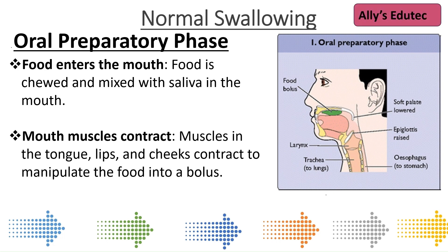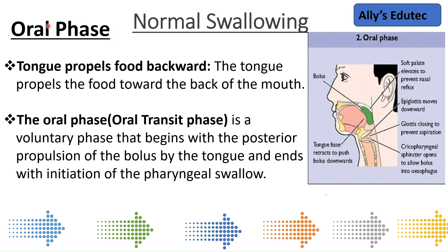After the preparatory phase, the second phase starts — that's called the oral phase. In the oral phase, the tongue pushes the food bolus to the back of the throat, so it's getting ready for swallowing. The tongue propels the food backward; it is also a transit phase. It's a voluntary phase that begins with the posterior propulsion of the bolus by the tongue and ends with the initiation of the pharyngeal swallow.